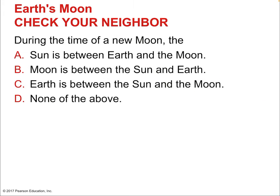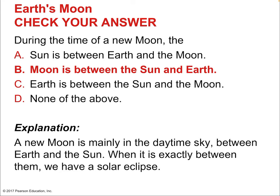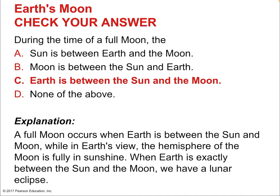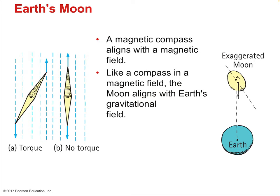During a new moon, the moon is between the sun and the Earth — the side reflecting sunlight faces away from us, so we can't see it. During a full moon, the Earth is between the sun and the moon — the side facing us is reflecting sunlight, which is why it appears full. Like a compass aligns with a magnetic field, the moon aligns with Earth's gravitational field, creating the tidal effect that maintains that tidal rotation.